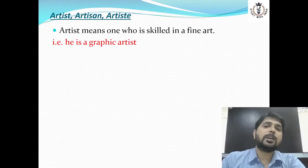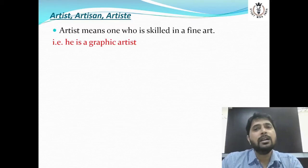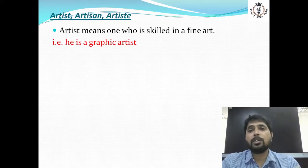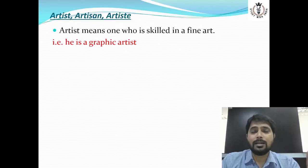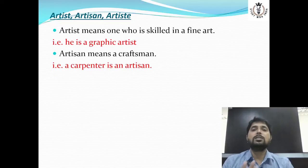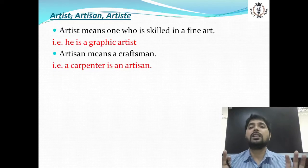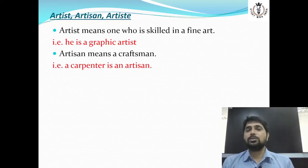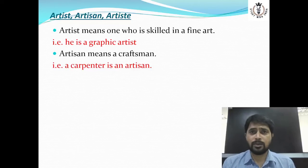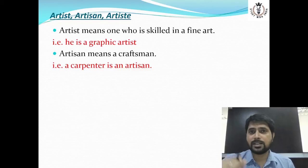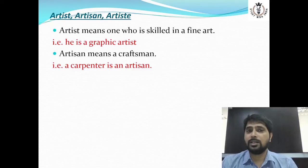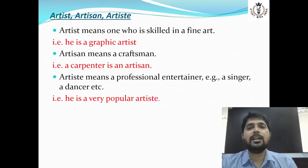The first word is 'artist'. Artist ka matlab hota hai who is skilled in fine art — jaise graphic artist ya phir computer mein designing applications jaise CAD wagera. Un sab ke jo designers hote hain fine art se related, unko hum log artist bolte hain. Spelling: A-R-T-I-S-T. Next word: 'artisans'. Artisans ka matlab hota hai craftsman — jo kuch banate hain. For example, carpenter jo lakdi se chizen banata hai, unko hum artisans bolte hain.